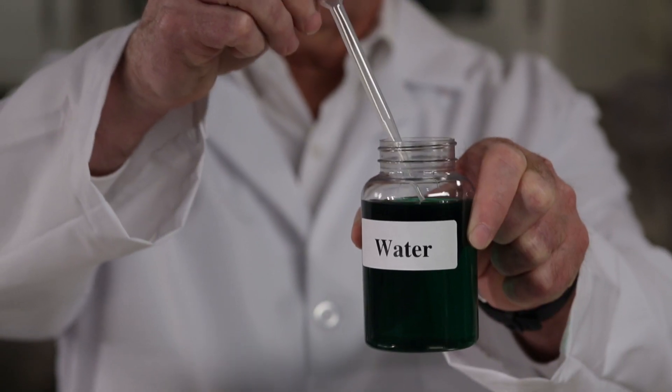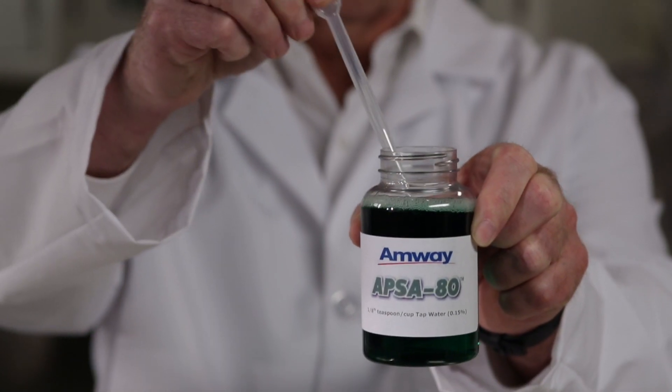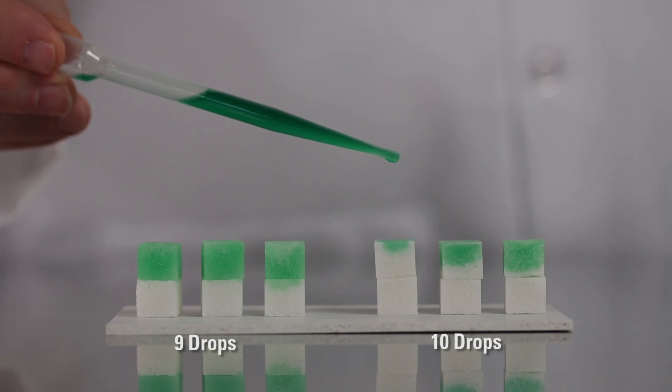Using the pipette, add nine drops of tap water to the first group of sugar cubes and 10 drops of APSA 80 solution to the second group of sugar cubes. Note that we use 10 drops of APSA 80 to compensate for the decrease in volume per drop of the APSA 80 solution.